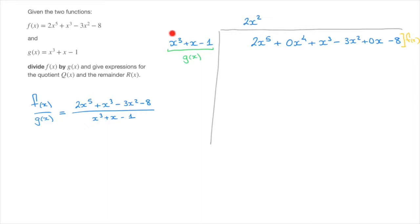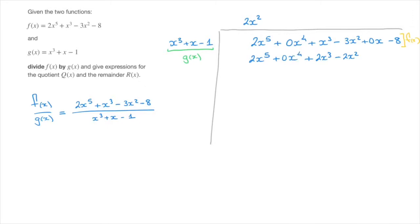Now I multiply the entire expression x³ + x − 1 by 2x² and write the result directly below the top row. 2x² × x³ = 2x⁵, and 2x² × x = 2x³, which I write directly beneath the x³ of the top row. Then 2x² × 1 = 2x², written beneath the 3x² term, so that's −2x². I also write +0x⁴ here, simply to remind me I haven't forgotten an x⁴ term and that it is indeed 0.